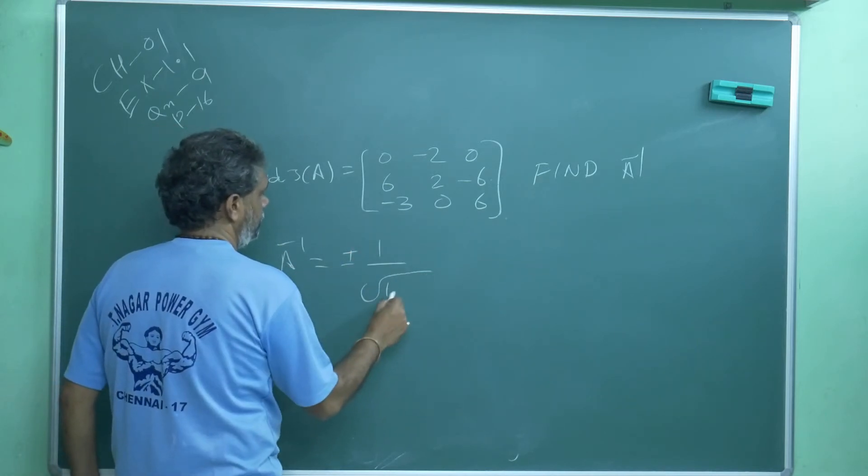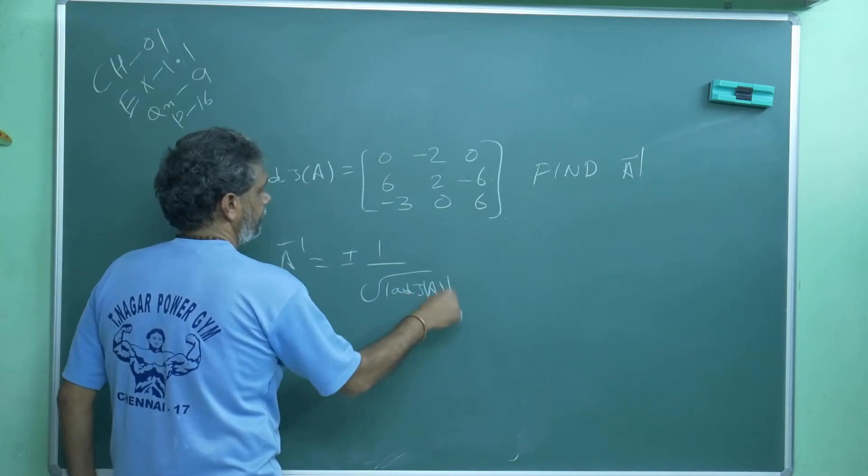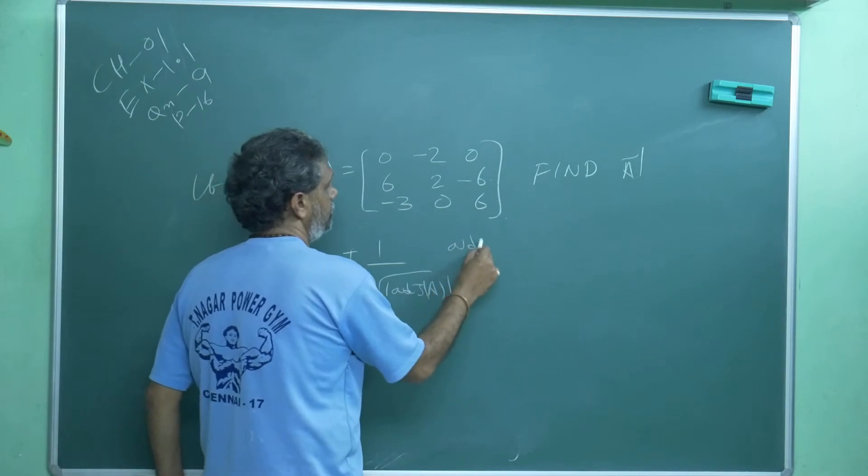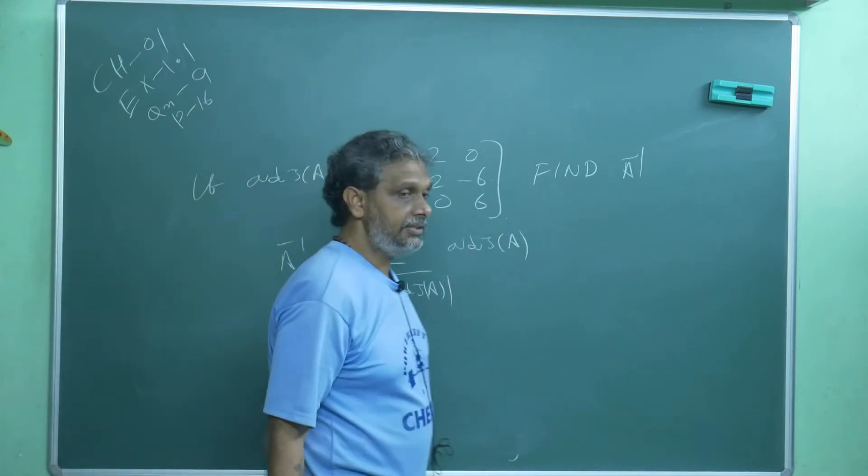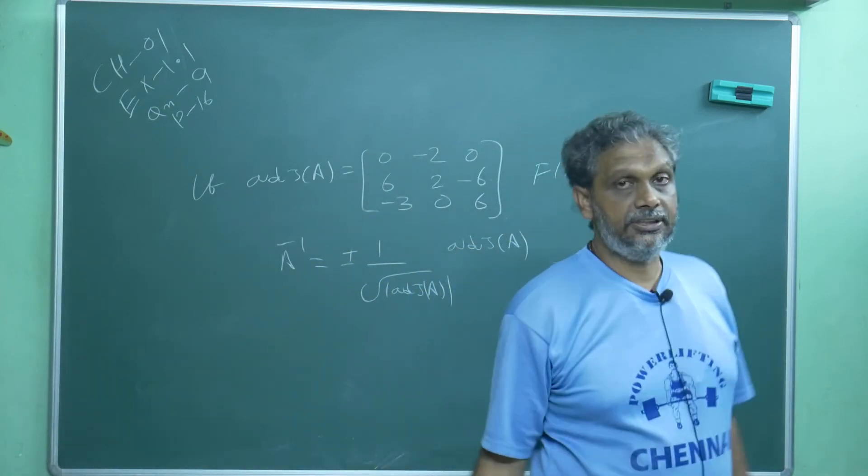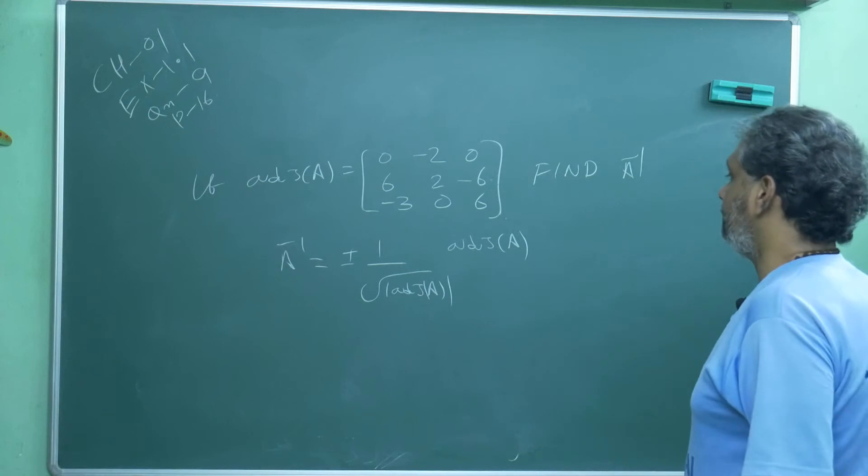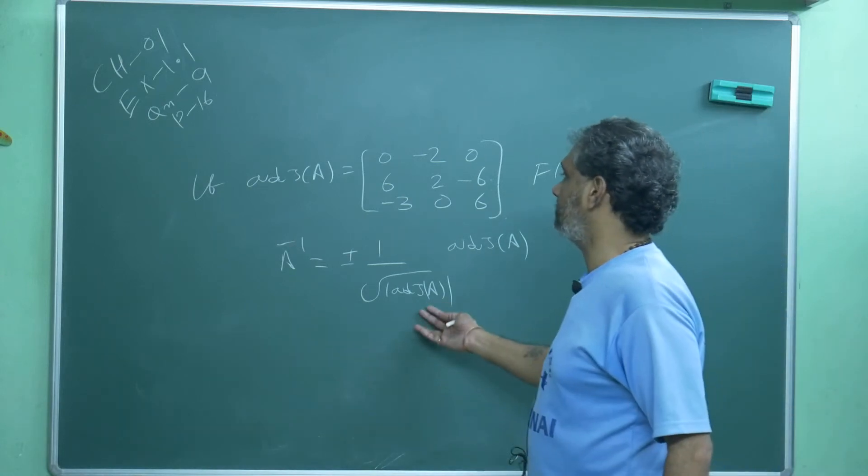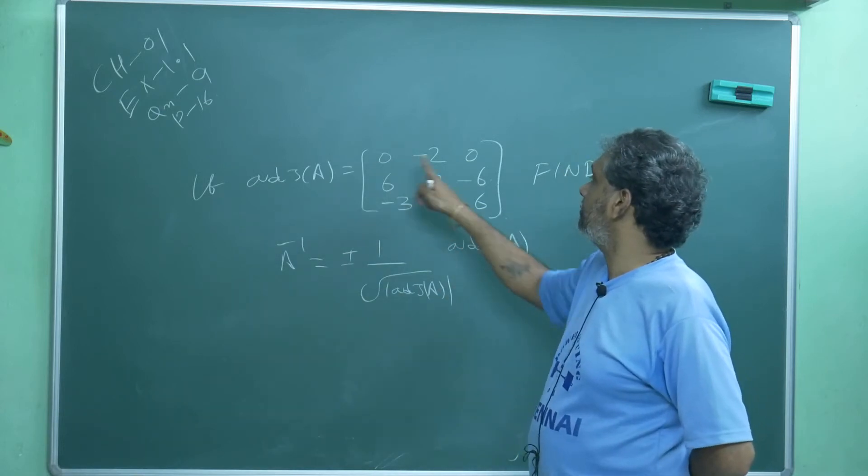If they ask A inverse, once the adjoint of A is in your hand, if you are able to find determinant of adjoint of A, your job is over. This problem is very easy because this element is 0, this element is 0.